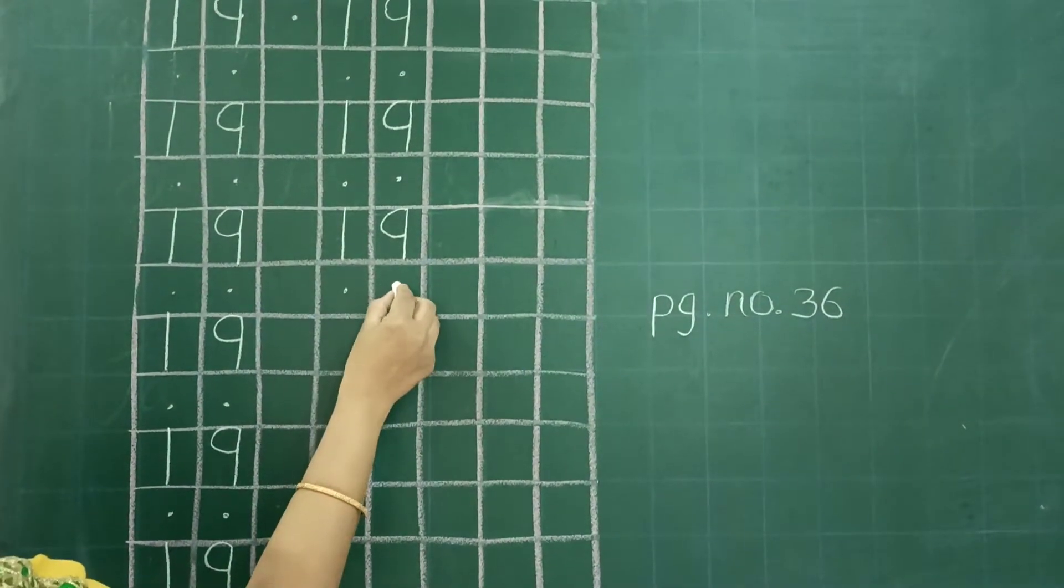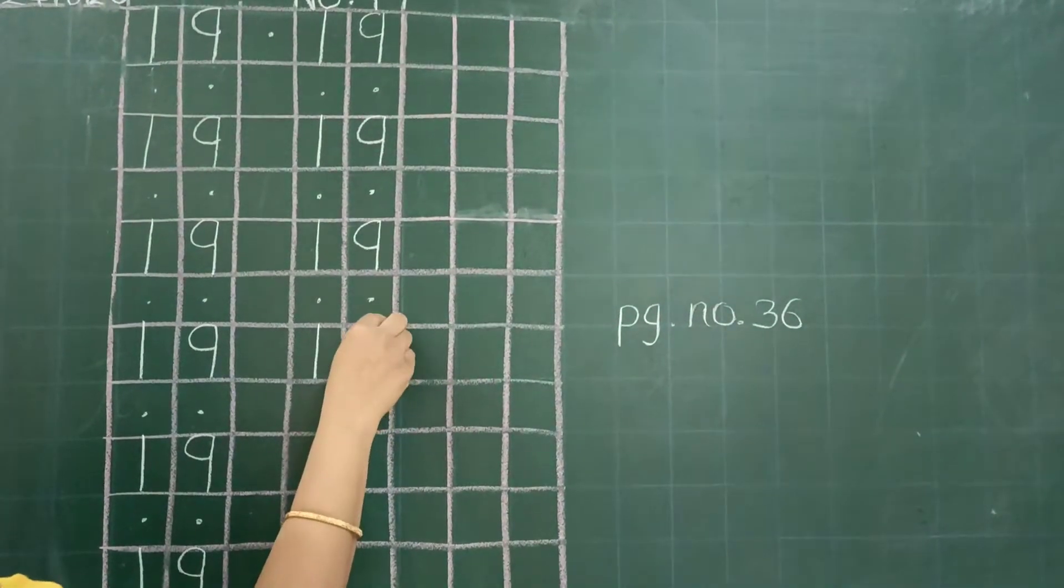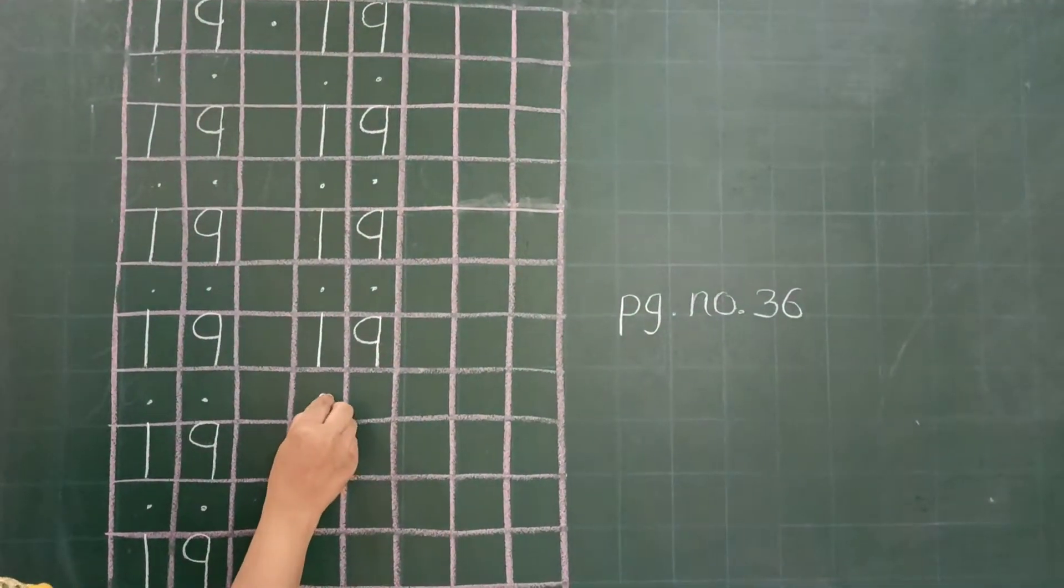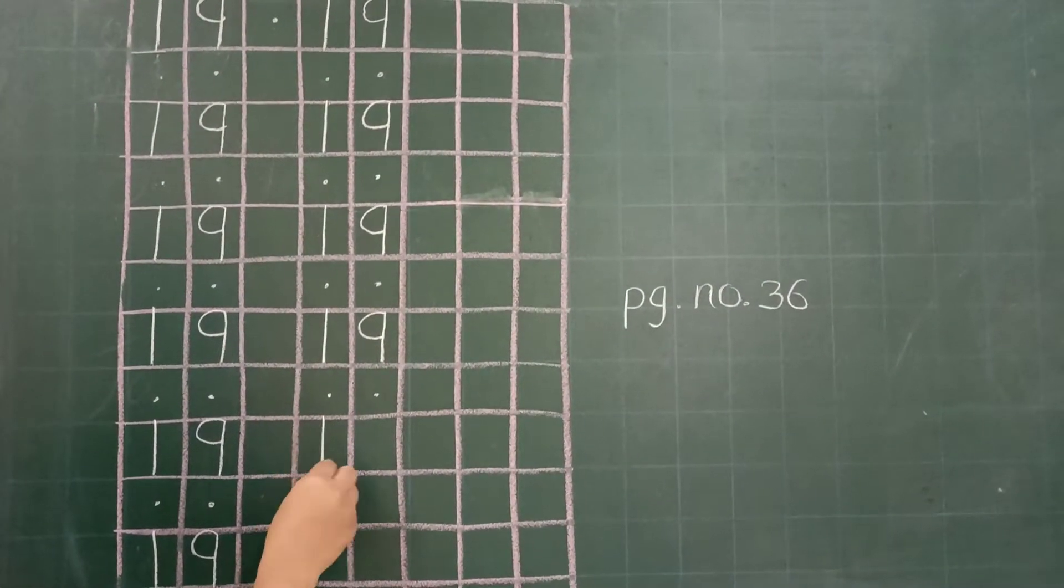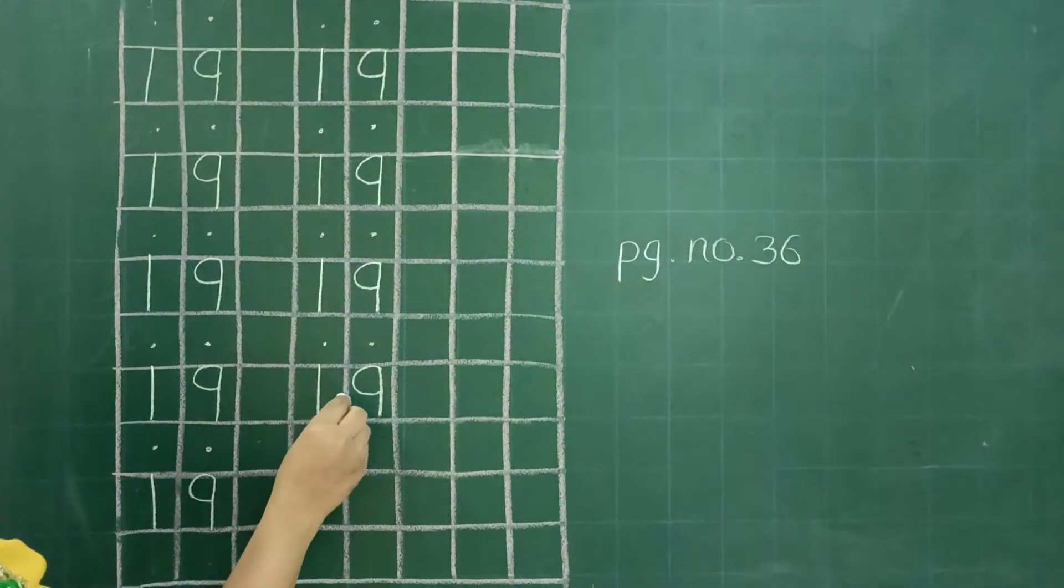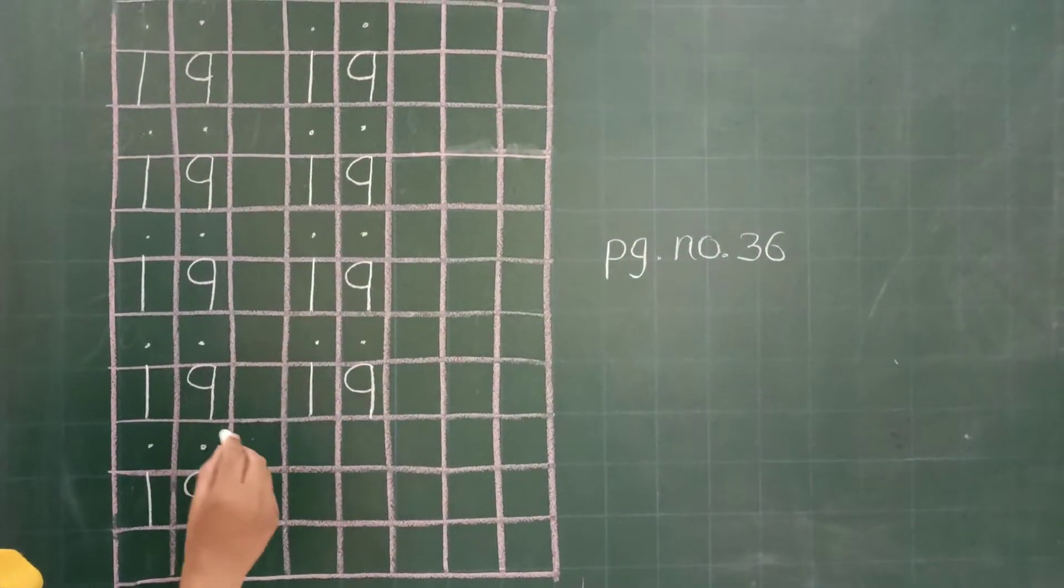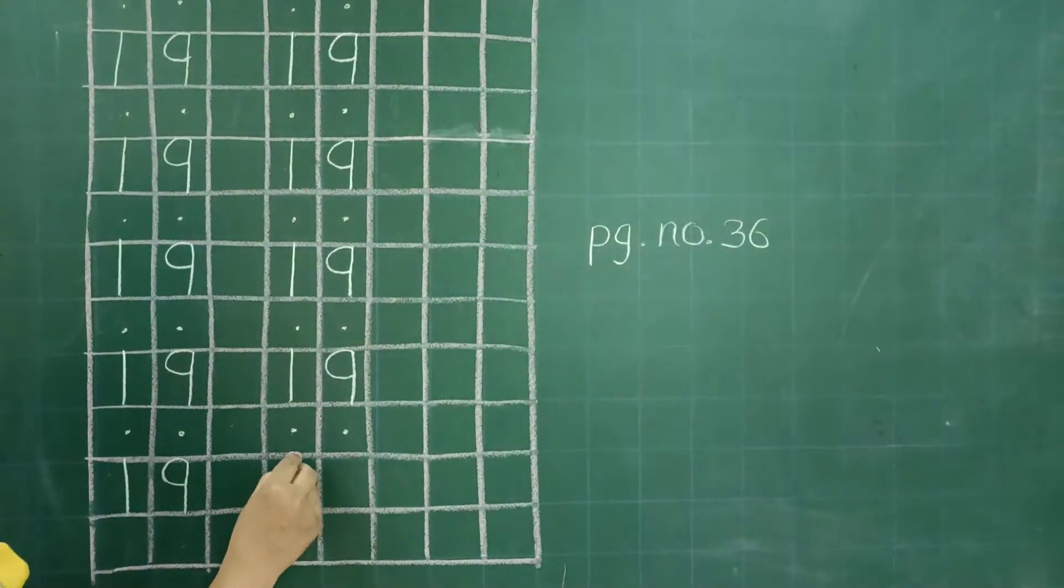Today you are writing number 19. So every time when you are writing the number, you have to say which number you are writing. We are writing number 19, that is 1, 9, 19.